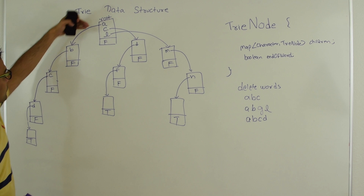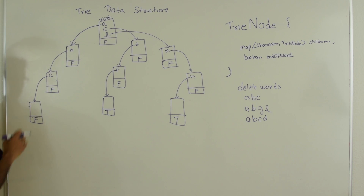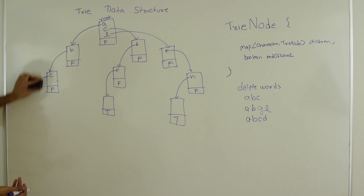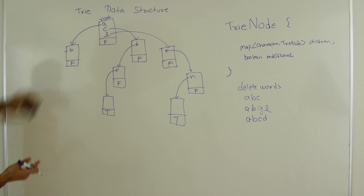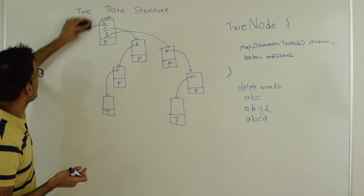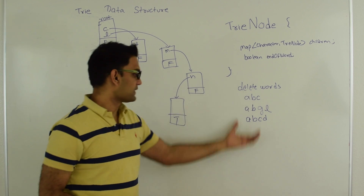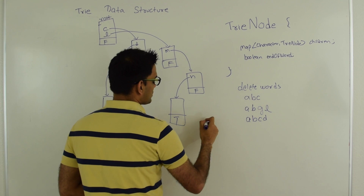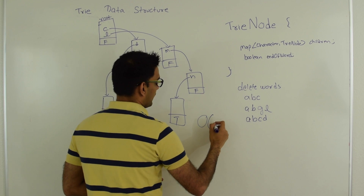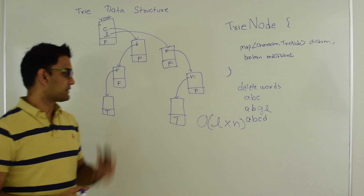Next we'll delete ABCD. We follow ABCD and reach that node. Since that map is empty we delete it, go one level up and delete that character. Now that level is empty so we delete it, and continue going up — B will be removed, then A from root. The time complexity for deletion is O(L × N) where L is the average word length and N is the number of words.